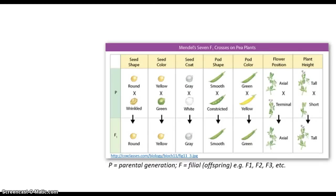These are the traits that Mendel studied. Just some vocab to get out of the way. This first generation is referred to as the parental generation. The F stands for filial, or offspring. The first generation would have been the F1, the next would be the F2, then the F3, etc.